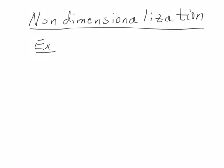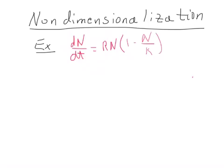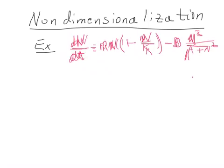We're going to work on non-dimensionalization. The example we're going to use is the budworm model. This model has several parameters, and one of our jobs here is to reduce the number of parameters by getting rid of the units.